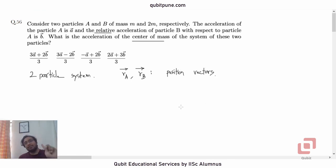What will be the position vector of the center of mass of the system? We know the formula. It is m1 r1 bar, so in this case it will be m_a r_a bar plus m_b r_b bar upon m_a plus m_b.